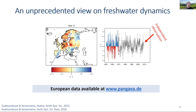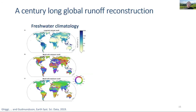This approach can obviously be used not only for Europe. We've been creating reconstructions of global freshwater dynamics ranging back to the early 20th century. We can use this tool to compute average statistics like long-term means, the average month with minimum runoff, or the average month with maximum runoff, which could be relevant for water resources management.